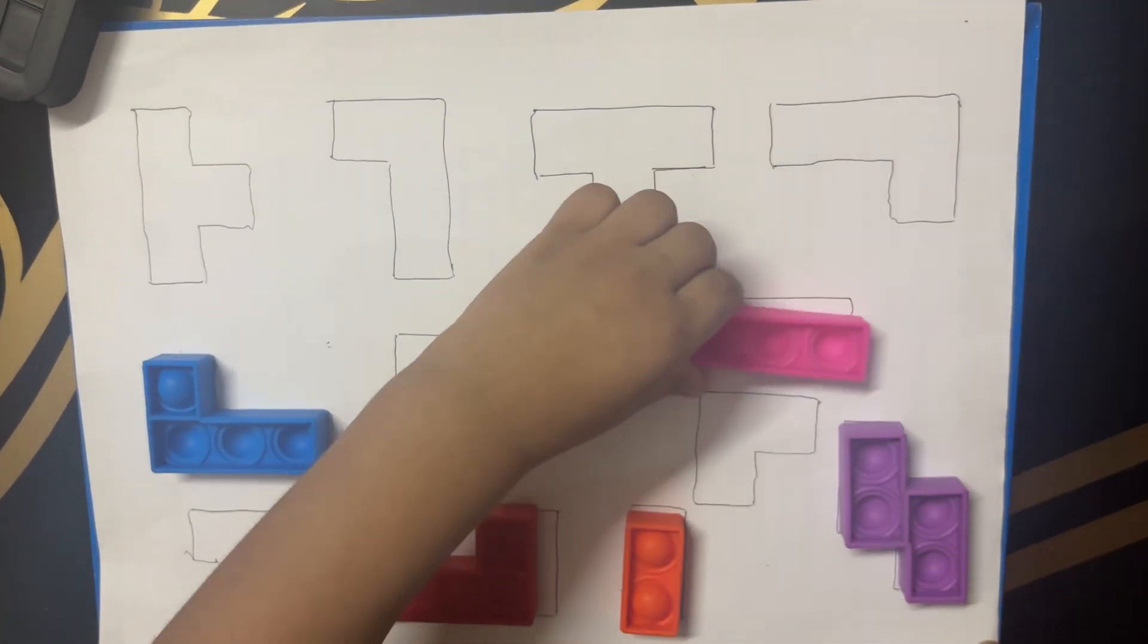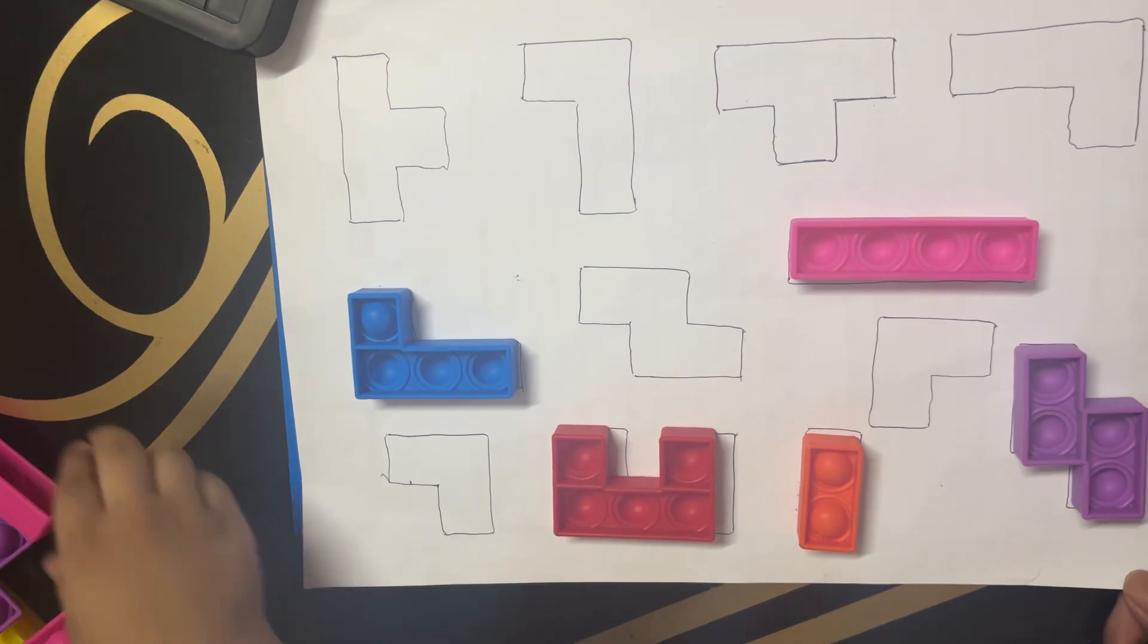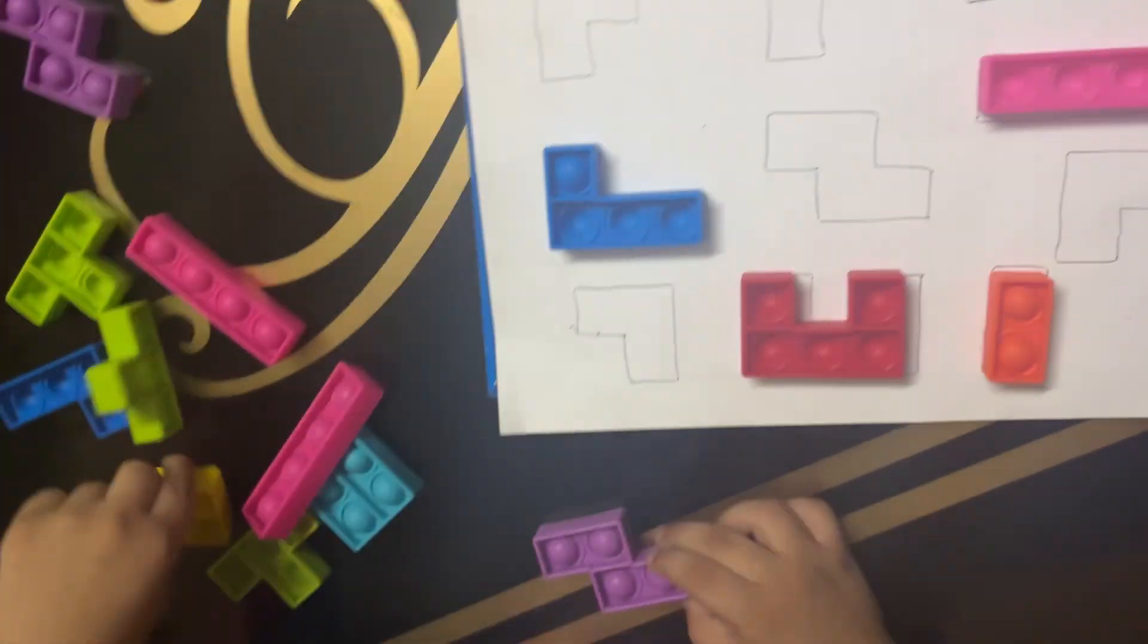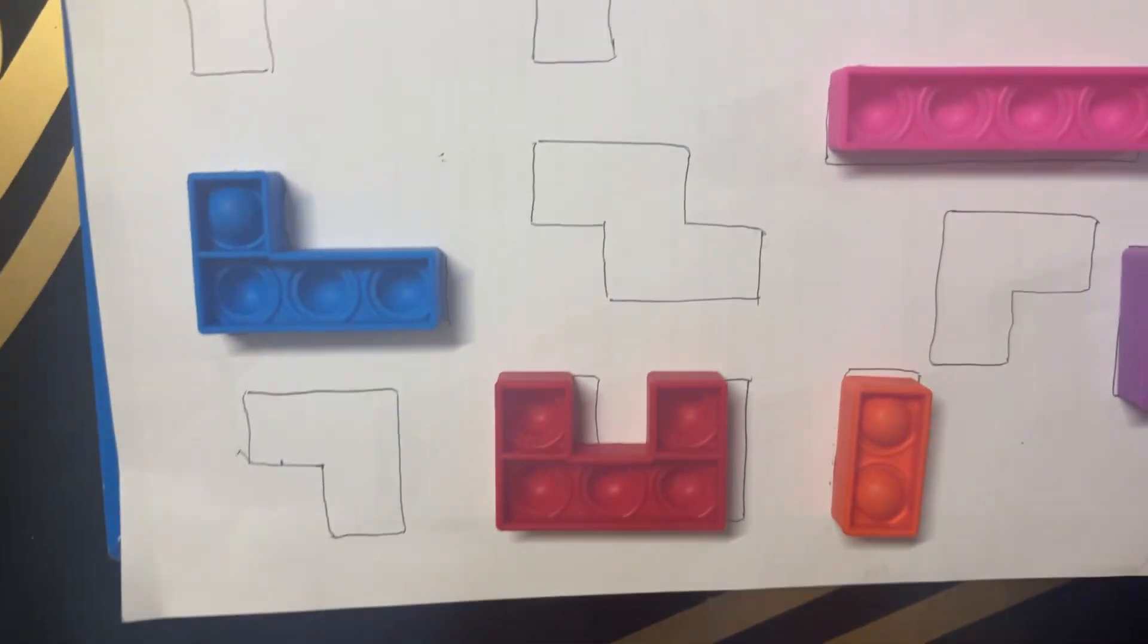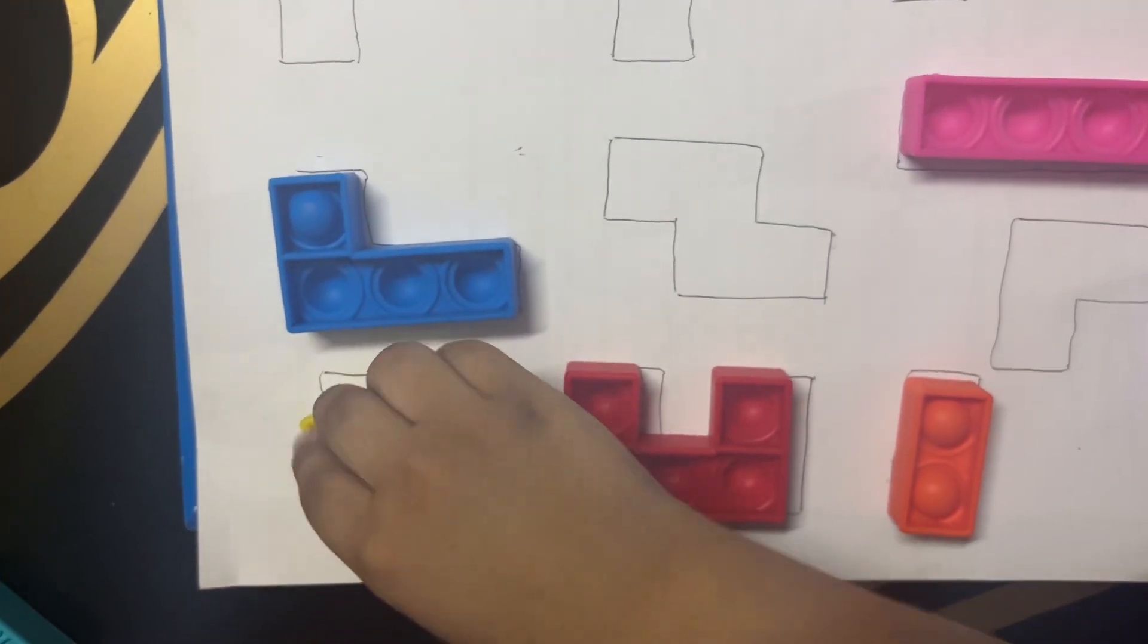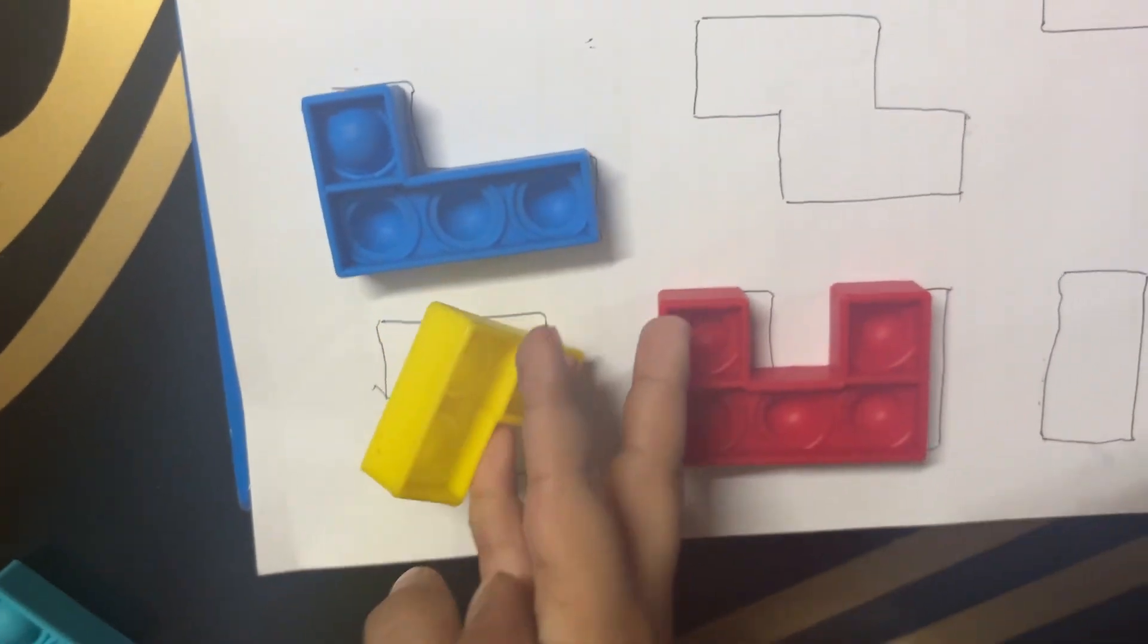You can use different materials if you have animals or ABC letters or blocks. You can just draw the picture on the paper and ask your child to match it. It's very good for hand and eye coordination.